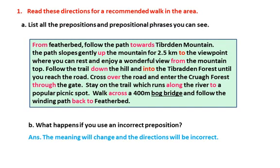Children, on the same page, read these directions for a recommended walk in the area and list all the prepositions and prepositional phrases you can see. There is a paragraph with all the prepositions highlighted in red color: from, towards, up, to, again from, down, into, over, through, along, to, across, back to. You have to read the full sentences, understand the prepositions, underline them, and write them in your notebook. Question B: what happens if we use an incorrect preposition? The meaning will change and the directions will be incorrect.